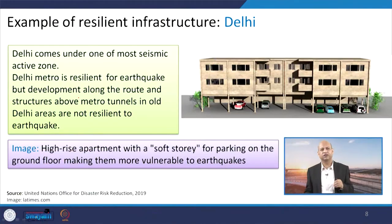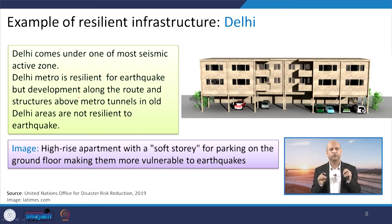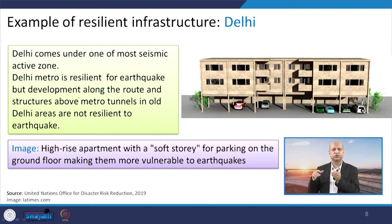As an example for Delhi, some pockets have been identified where high-rise buildings and parking lots are not in harmony, making them vulnerable if something like an earthquake occurs. Similarly, when routes were designed, certain limitations were taken into account to make the system more resilient.